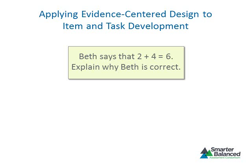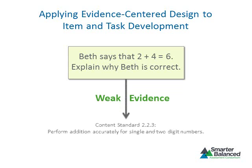As an example, let's return to the item that asks students to explain how they know 2 plus 4 equals 6. This item appears aligned with the content standard because it focuses on addition. However, the evidence elicited by the item may not allow a claim to be made about whether or not the student can actually add. In order to provide appropriate evidence about a student's ability to add, the item must be redesigned.